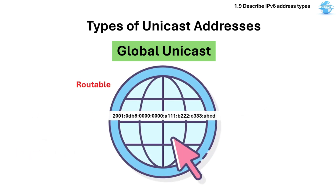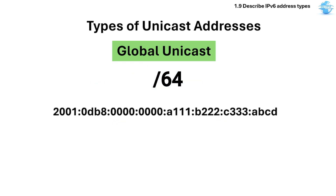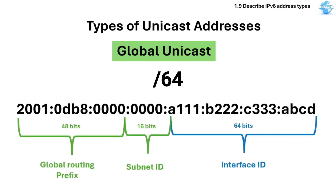Global Unicast is routable on the global IPv6 internet — it's the equivalent to public IPv4. An exam tip: know that /64 is the standard subnet size, even for global addresses.